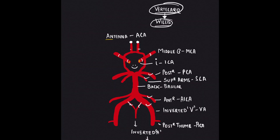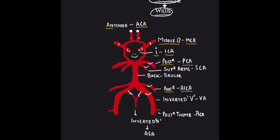Just remember the alphabet A from both his antennas, which represent the anterior cerebral artery. His middle ears represent the middle cerebral artery. As the word 'eyes' sounds like the letter I, it represents the internal carotid artery. The first pair of arms of Willis are present posteriorly, representing the posterior cerebral artery, whereas the first pair of legs are present anteriorly, representing the anterior inferior cerebellar artery. The second pair of arms are 'super arms,' representing the superior cerebellar artery. The back represents the basilar artery.